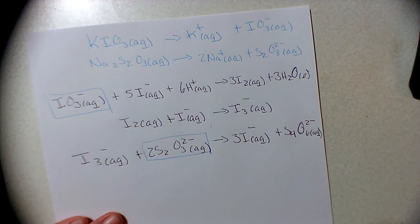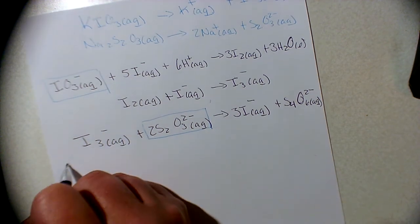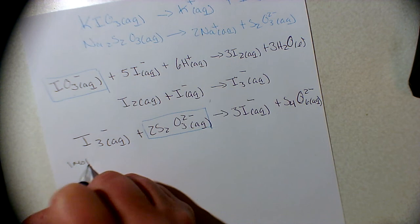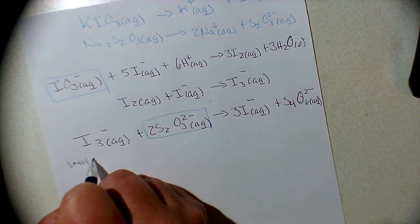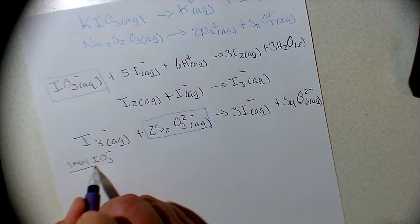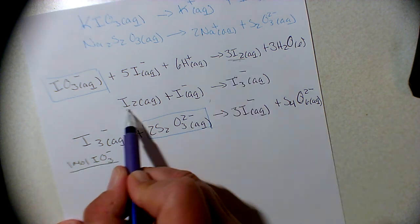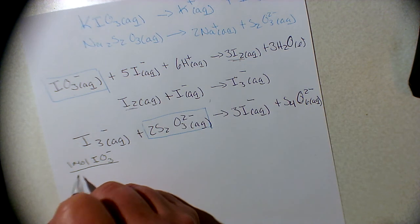So let's see how that looks. It just begins with our mole-to-mole ratio. We have one mole of potassium iodate IO3 ion, and that goes to, we want to go to our iodine, goes to three moles of I2.